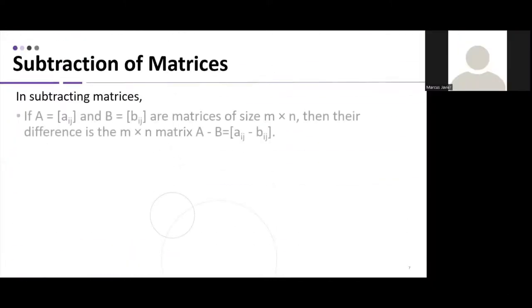If it's clear, let's proceed. If we have addition, let's proceed to subtraction of matrices. In subtraction, like in set B from our motivation earlier, if you remove the gray background, it will result into a different picture. That goes the same with subtraction of matrices. In subtracting matrices, if A is set A sub ij, and B is equals to a set B ij, are matrices of size M times N, then their difference is the M times N matrix wherein we have A minus B is equals to A sub ij minus B sub ij. It's the same as the definition for addition, but the difference is we are going to subtract instead of add. Let's have a look at the examples.